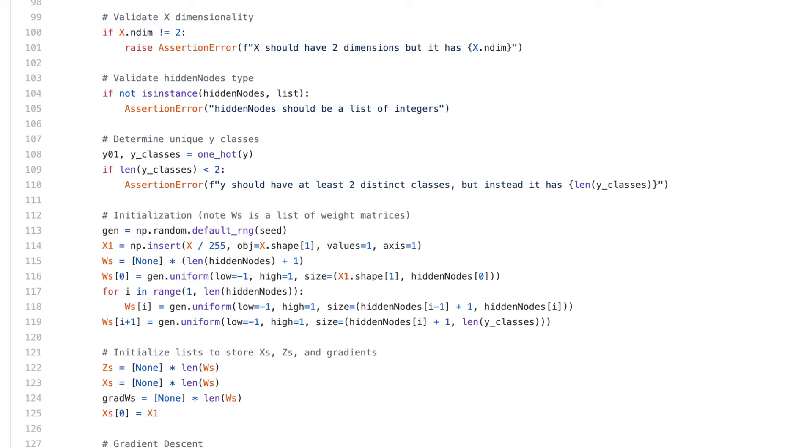Then I populate the first weight matrix, based on the shape of the input layer and the number of hidden nodes in the first hidden layer. Next, I populate the weight matrices that go between hidden layers. And lastly, I populate the weight matrix that goes from the last hidden layer to the output layer.